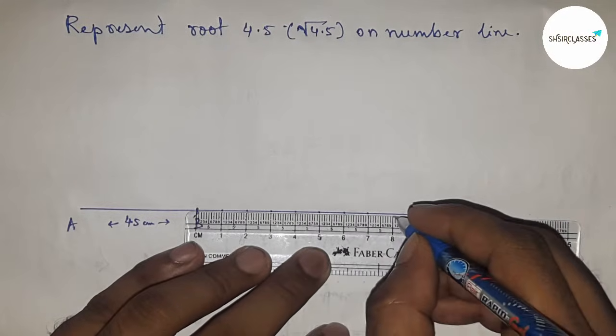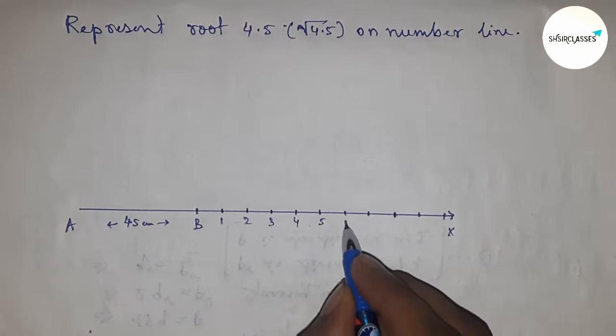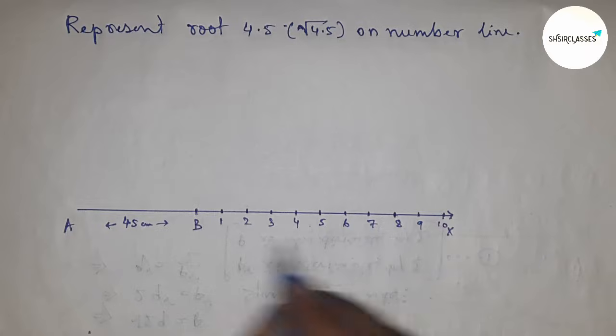Next, mark the line BX with numbers. So this is 0, 1, 2, 3, 4, 5, 6, 7, 8, 9, 10, and so on. This is point C.